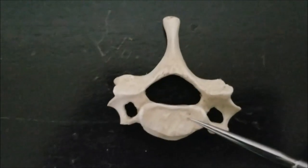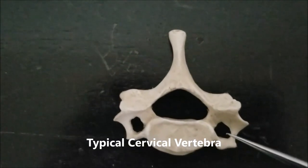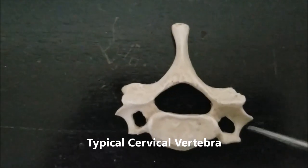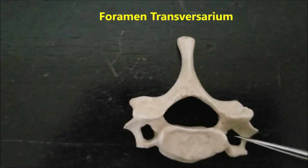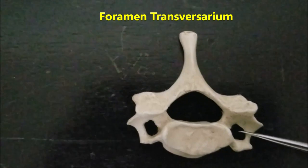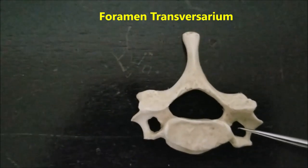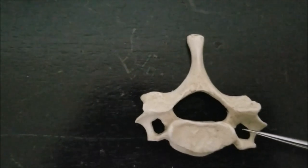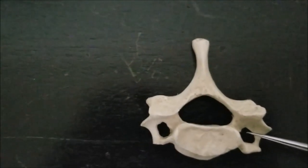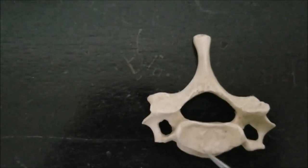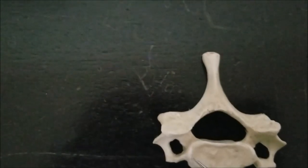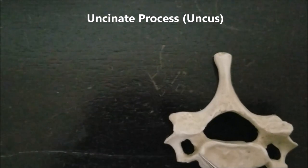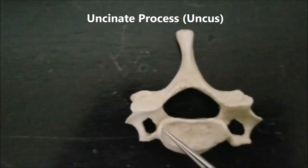The vertebra in front of you is a typical cervical vertebra. The first characteristic feature is this foramen here, known as the transverse foramen, or in Latin, the foramen transversarium. It is very typical of a cervical vertebra — we should be able to identify a cervical vertebra from a distance just by looking at the transverse foramen. The next feature is these projections on the lateral aspects of the vertebral body, on the superior aspect only. They are referred to as the uncinate process, or the uncus.